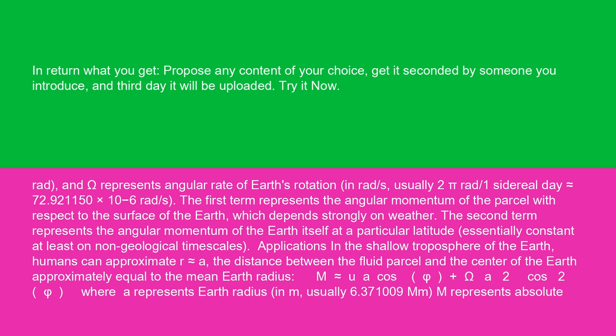The first term represents the angular momentum of the parcel with respect to the surface of the earth, which depends strongly on weather. The second term represents the angular momentum of the earth itself at a particular latitude, essentially constant at least on non-geological timescales.